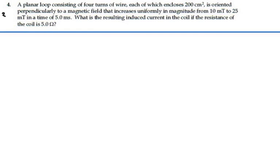Here's problem 31.4. A planar loop consisting of four turns of wire, each of which encloses 200 square centimeters, is oriented perpendicularly to a magnetic field that increases uniformly in magnitude from 10 millitesla to 25 millitesla in a time of 5 milliseconds. What is the resulting induced current in the coil if the resistance of the coil is 5 ohms?